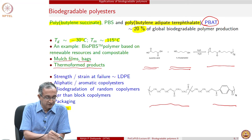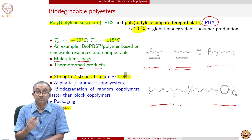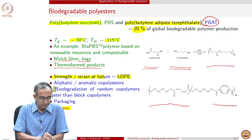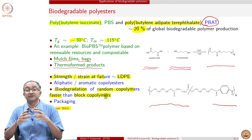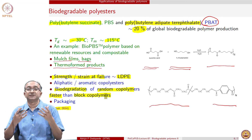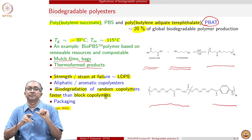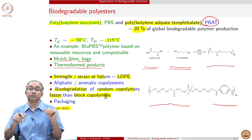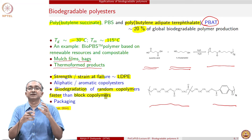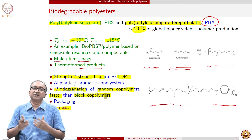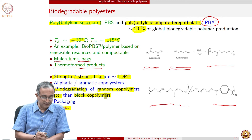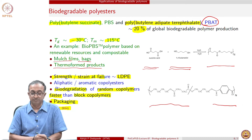The strength and strain at failure of PBAT is similar to polyethylene. Biodegradation of random copolymers is faster than block copolymers: in block copolymers, blocks of polyaromatic entities reduce access for biodegradation, whereas in random copolymers, chain cleavage can occur wherever there are aliphatic chains, and smaller molecules can then be assimilated by microorganisms. Generally, PBAT is used in packaging applications.